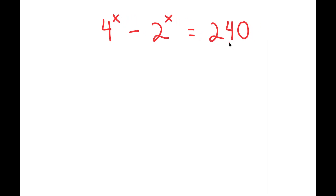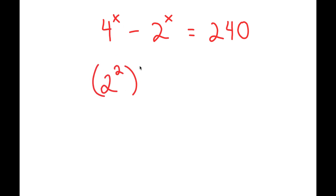So to solve this, what I'm first going to do is rewrite 4 here as 2 squared. So I have 2 squared to the power of x minus 2 to the power of x is equal to 240.